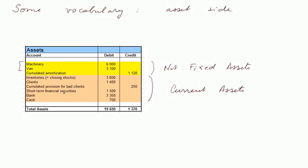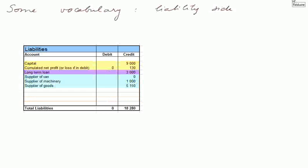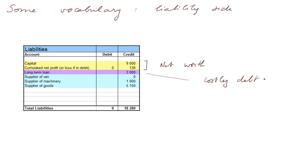On the liability side, let's also see some vocabulary. We distinguish three parts. First of all, the capital and the so-called cumulative net profit — that is the profit of the year and possibly profits of past years — and this is called the net worth of the firm. The second account here is a long-term loan, long-term debt. And this part I call the costly debt, because this is debt that costs money. And finally, these accounts here I call the free debt.